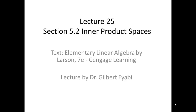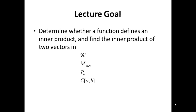This is Dr. Gilbert E.R.B. Lecture Goal: Determine whether a function defines an inner product and find the inner product of two vectors in Rⁿ, of two vectors in Mₙ — the set of matrices of dimension M cross N — the set of all polynomials of order N, and the set of all real-valued continuous functions on the closed bounded interval [A, B]. Recall that all these are vector spaces.